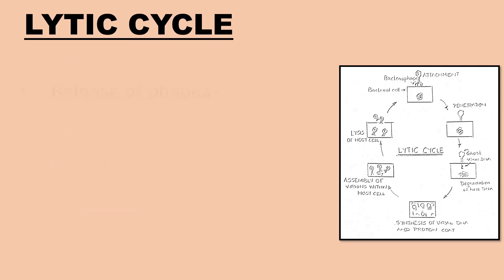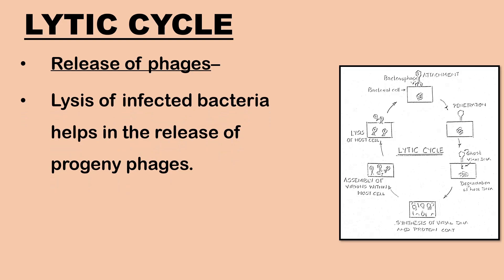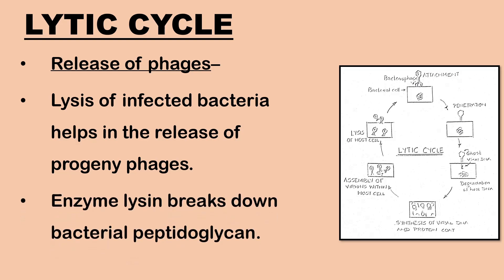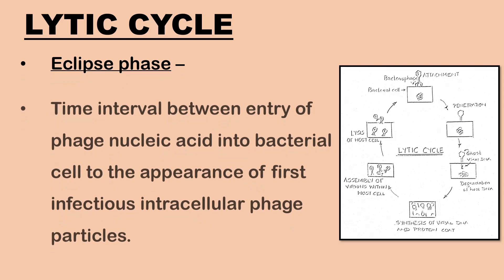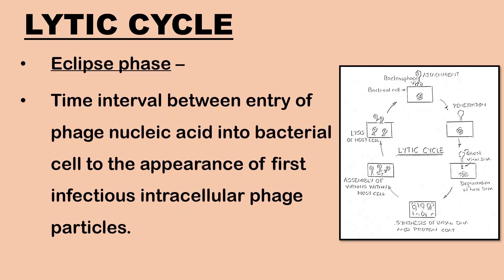The final stage is release of phages. The progeny phages are released by the lysis of the infected bacterium. The breakdown of the bacterial peptidoglycan is brought about by a bacteriophage-coded enzyme lysin. Eclipse phase is the time interval between the entry of phage nucleic acid into the bacterial cell to the appearance of first infectious intracellular phage particles.